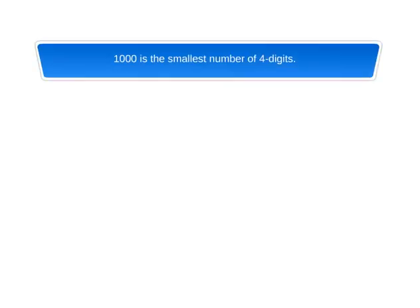1,000 is the smallest number of 4 digits. We read 1,0,0,0 as one thousand.